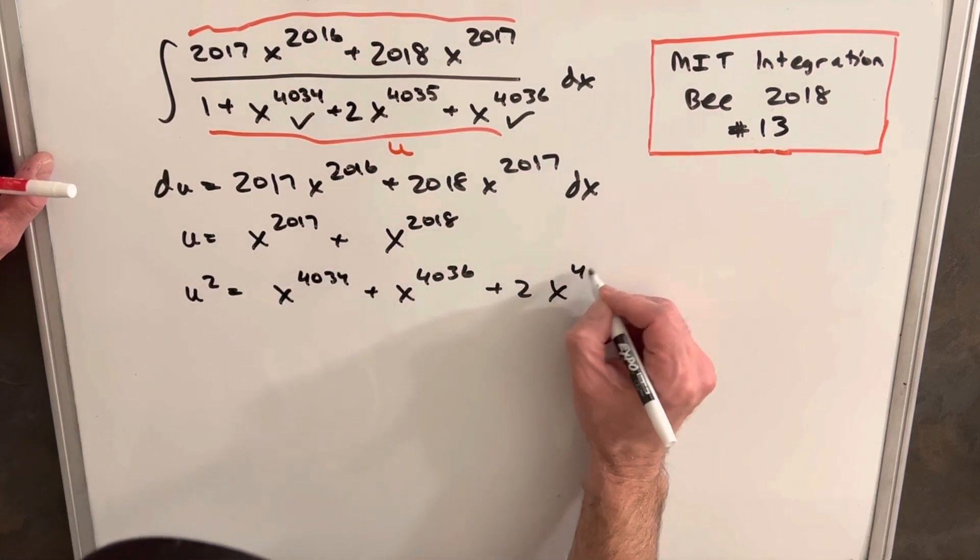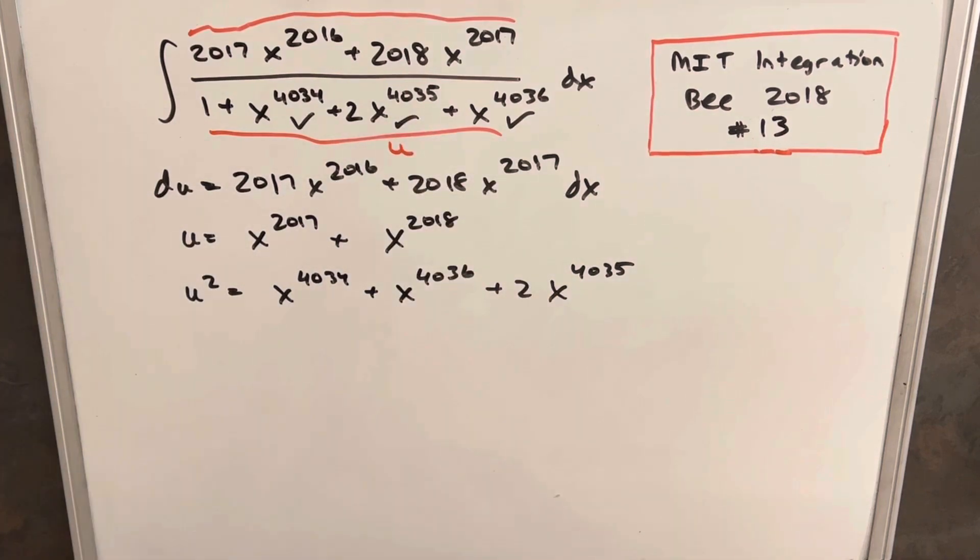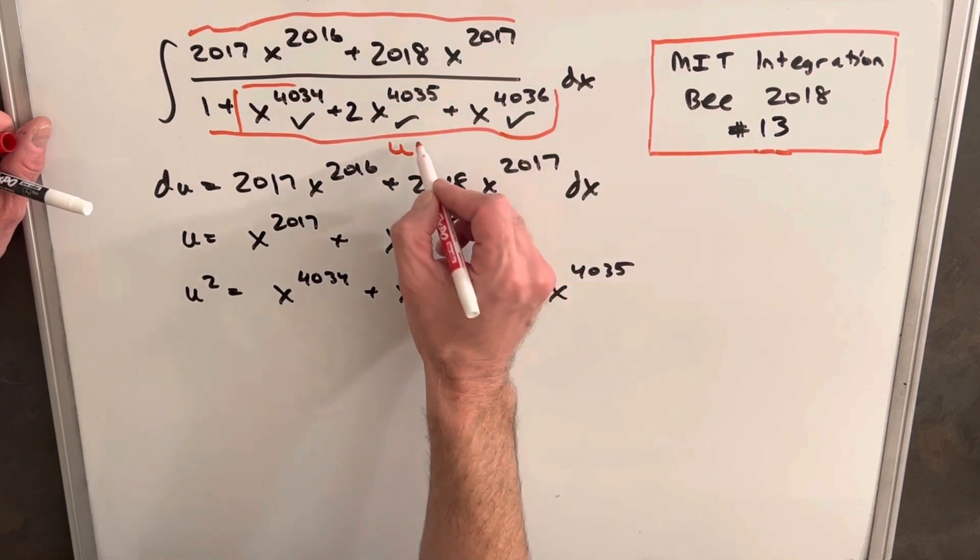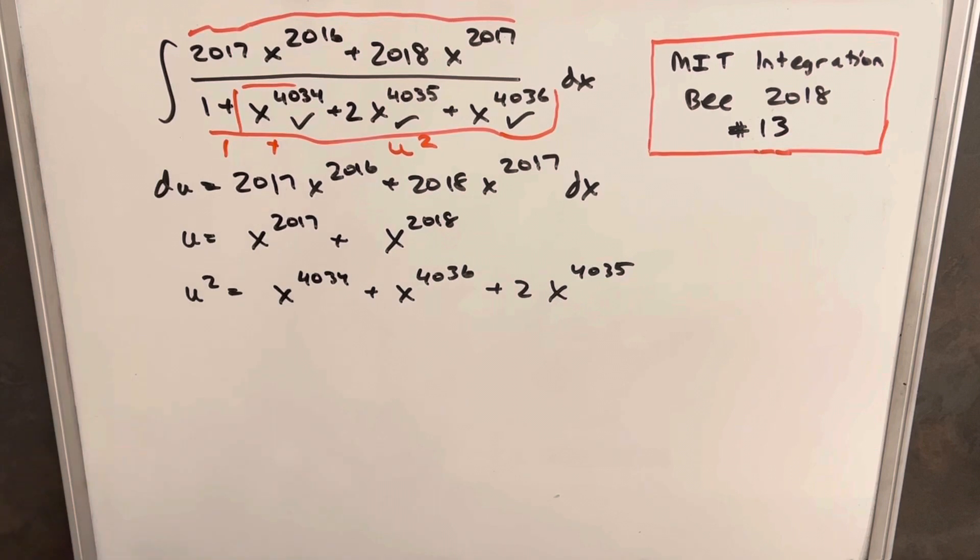Then we multiply the inner terms, we're gonna have two of these, we're gonna have two times x to the, adding it together we're gonna have 4035 and that's exactly that. So what happens is all of this stuff to the right is actually u squared and then we just have a plus one here but that's okay because we know how to deal with that. So we can actually make the substitution and clean this all up.